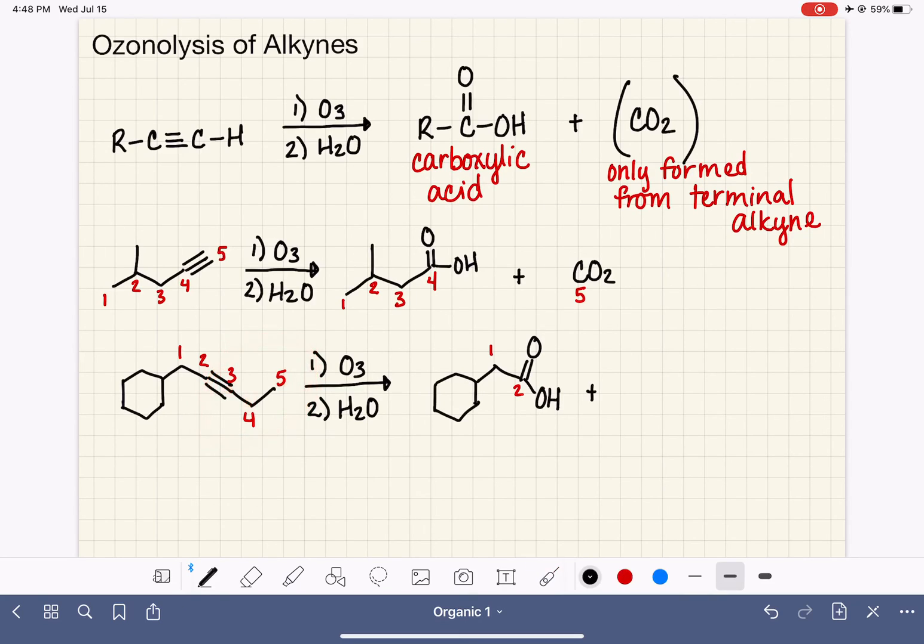And then the other half of the molecule, carbons three, four, and five. That is our second product. Carbon three, which was part of the alkyne, is also going to be part of a carboxylic acid. So when we do this with an internal alkyne, we make two carboxylic acid products. When we do this with a terminal alkyne, we make one carboxylic acid product and a CO2 byproduct.